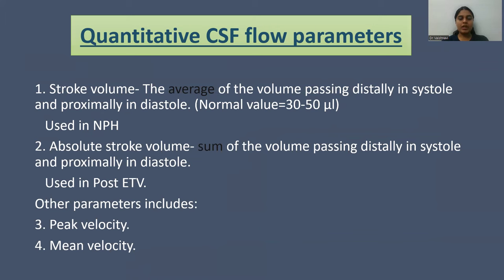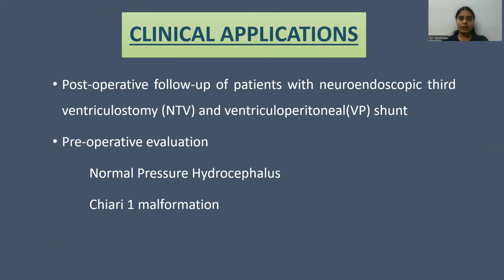Quantitative CSF flow parameters: the first one is the stroke volume, which is the average of the volume passing distally in systole and proximally in diastole. Normal value is usually between 30 to 50 microliters, and its use is in cases of normal pressure hydrocephalus. Absolute stroke volume is the sum of the volume passing distally in systole and proximally in diastole, and it is used in post-endoscopic third ventriculostomy patients. Other parameters include peak velocity and mean velocity.